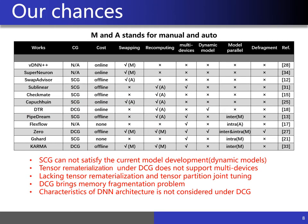In general, the shortcomings of existing research include: SCG cannot satisfy the current model development; tensor rematerialization under DCG doesn't support multi-devices; lacking tensor rematerialization and tensor partition joint tuning; DCG brings memory fragmentation problems; and the characteristics of DNN architecture are not considered under DCG.